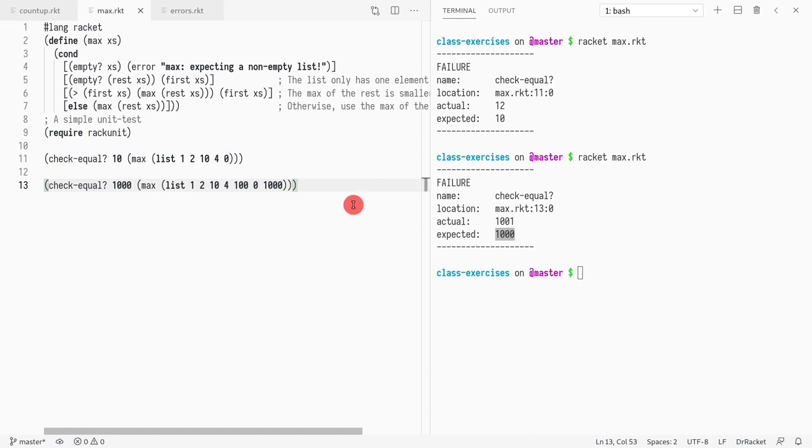But one thing you might be, so actually I could even simplify this. I could say length of rest, and I could say equal one. So if the list has one element, then you return the first, otherwise it has more than one. So we take the first element, we compare it with the maximum of the rest of the list.